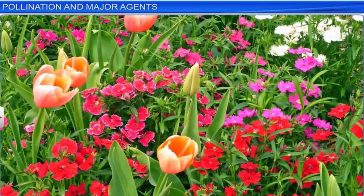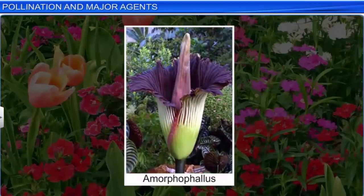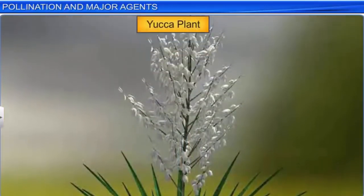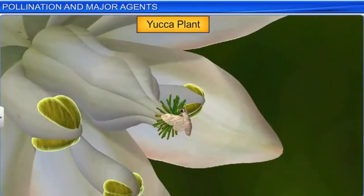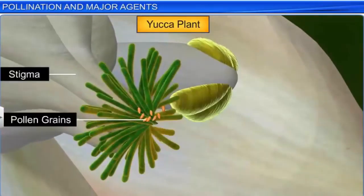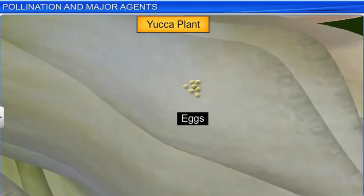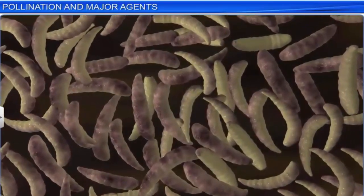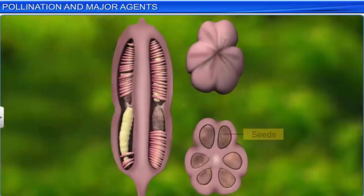Certain plants attract pollinating insects by offering them shelter. For instance, Amorphophallus — a six-foot tall flower — attracts pollinating insects by offering them a safe haven to lay their eggs. In the yucca plant, on the other hand, a female moth transfers the pollen of another flower to the stigma and simultaneously deposits her eggs in the locule of the flower's ovary. The larvae which hatch out of the eggs start consuming some of the developing seeds, while leaving enough of them to propagate the plant. Thus both the moth and the plant are dependent on each other for the completion of their respective life cycles.